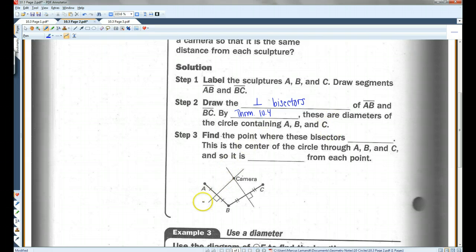So, all we have to do is figure out where these perpendicular bisectors intersect, and that's where we want to place our camera. So, we find the points where the bisectors intersect. This is the center of the circle through A, B, and C, so it is equidistant, or equal distance, from each point.